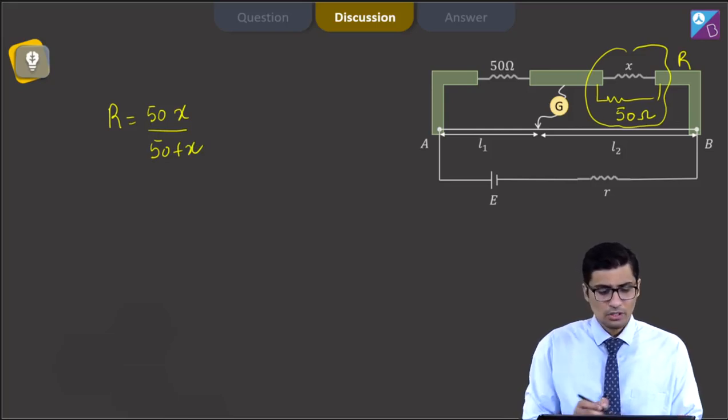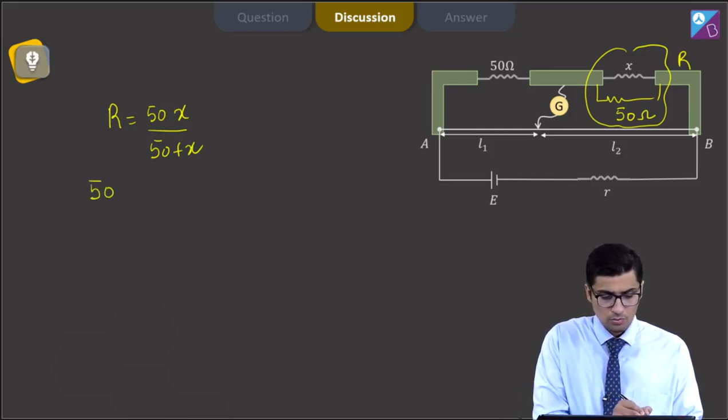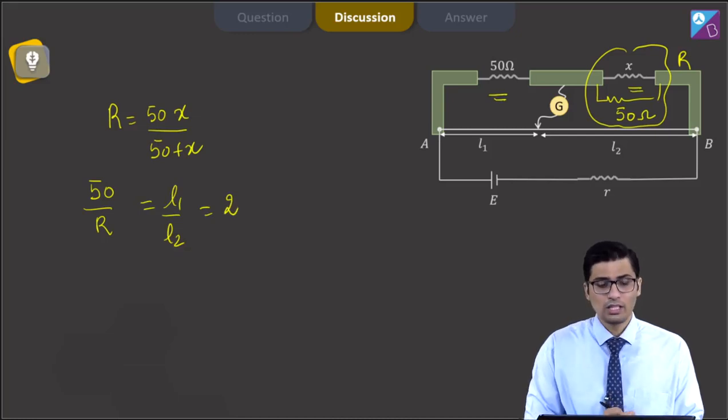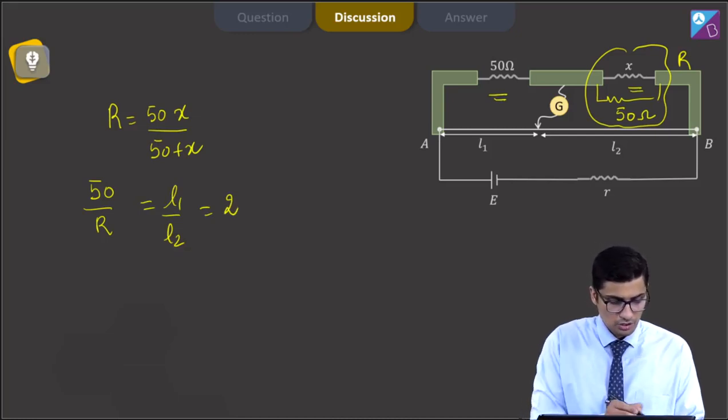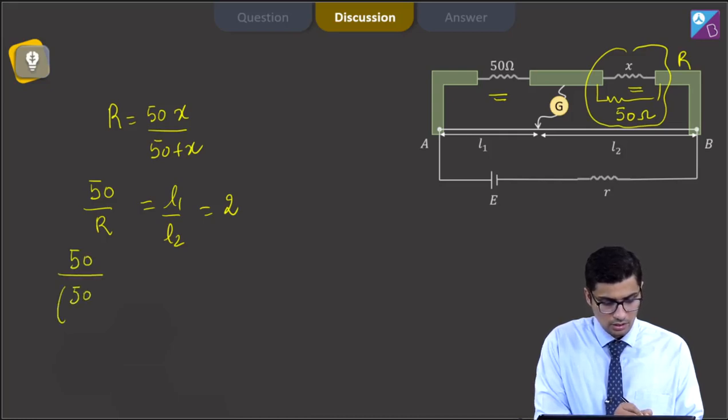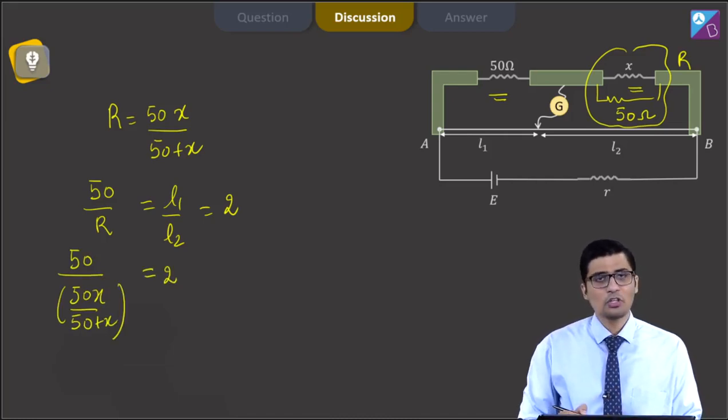Now from the concepts of the meter bridge, 50 ohms divided by R, that is this resistance divided by this resistance, will be equal to L1 by L2, and this is given to be equal to 2. We can substitute the value of R from the above expression and we can write that 50 divided by 50X by 50 plus X will be equal to 2.